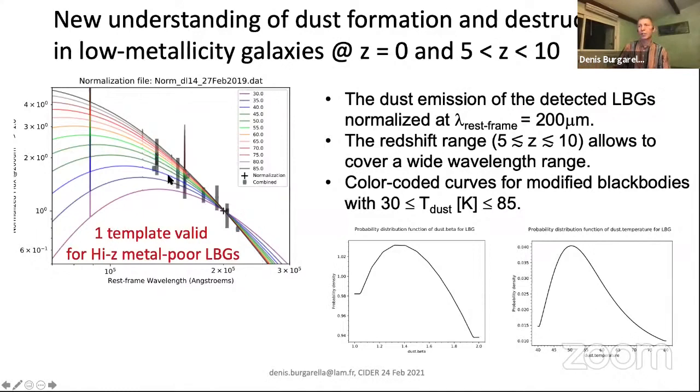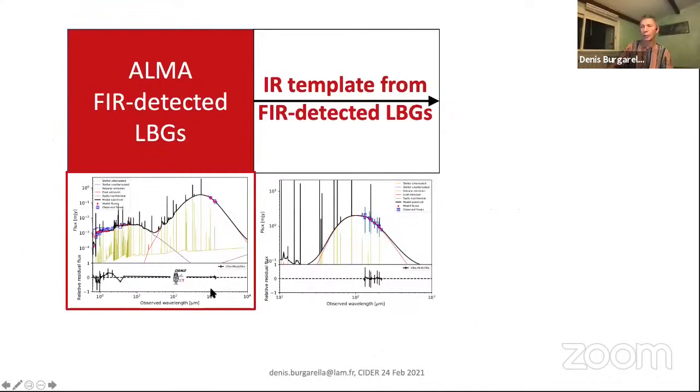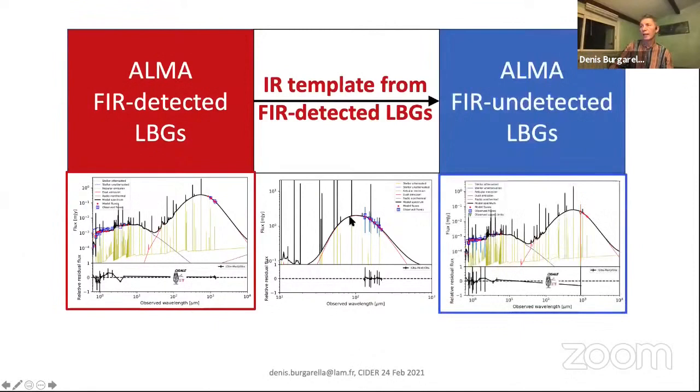This is the dust temperature assuming a modified blackbody from 30 to 85 Kelvin. If you do the SED fitting here, you get something where the dust temperature is around 50 Kelvin. But what we wanted to do first is to have one template which is valid for these high-redshift, metal-poor LBGs, and to use this template to fit it with CIGALE, estimate the parameters, and then apply it to the far-infrared detected LBGs.